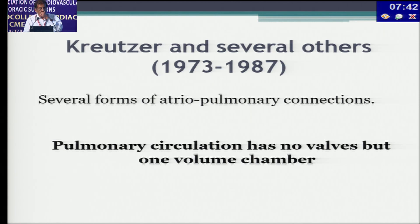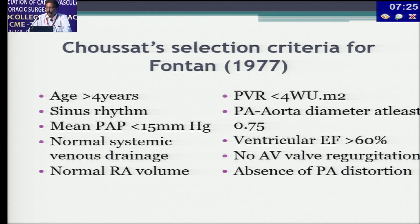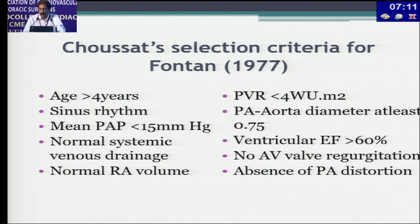From 1973 for 14–15 years, there were several forms of atrial-pulmonary connections — the atria being connected to the pulmonary artery, with no valves but one volume chamber. In the Fontan and Choussat criteria published in 1977, they stated that normal RA volume is necessary for a Fontan circulation to function, along with PVR less than 4 Wood units per meter squared, mean PAP less than 15 mmHg, and ventricular EF more than 60% — criteria that still hold today.